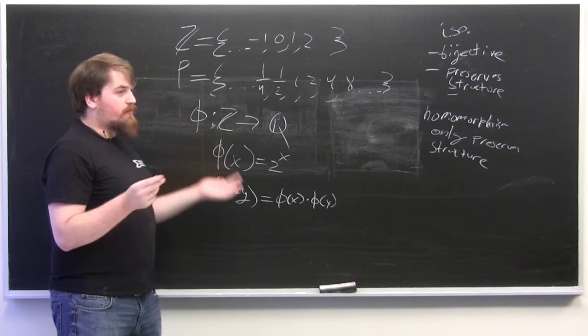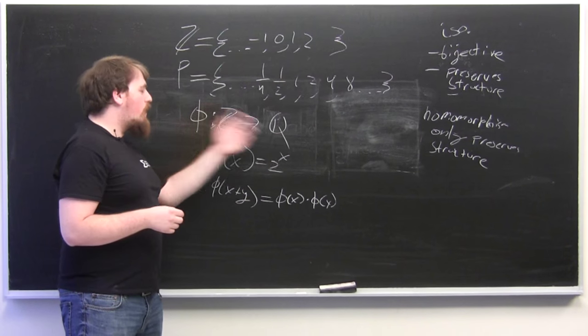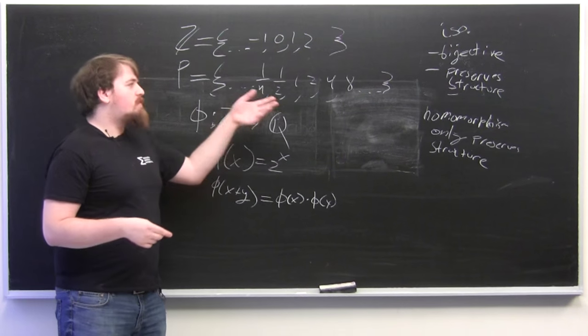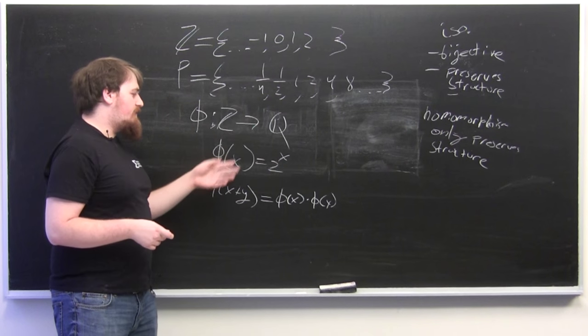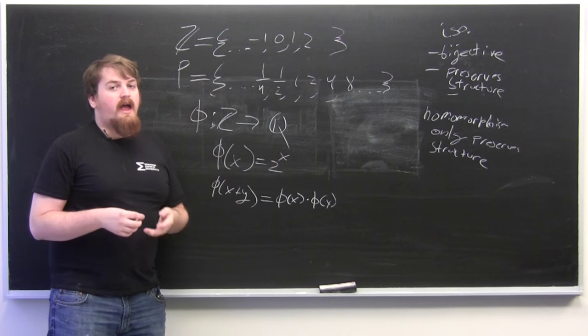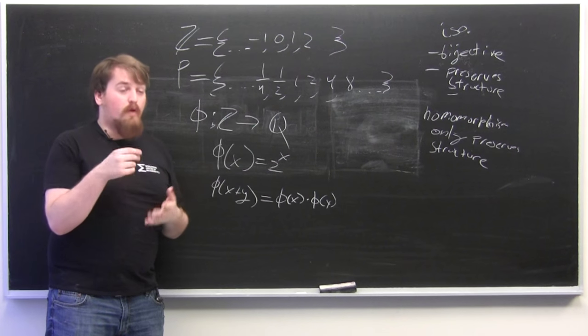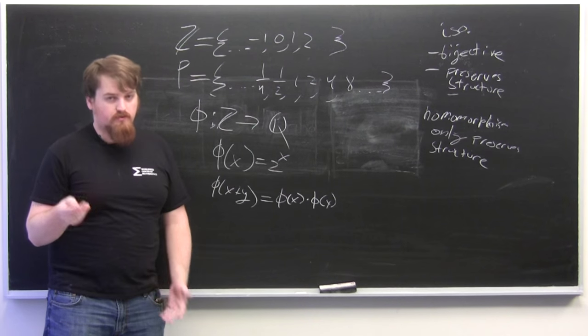And that means that it can't have an inverse because, say, one-third is an element in Q, which isn't a power of 2 and is thus not in the image of phi. And thus, any inverse of phi would have to send one-third somewhere, but it can't because one-third is not a power of 2.